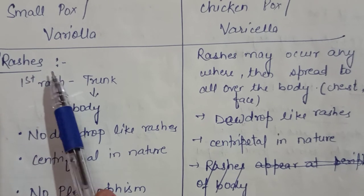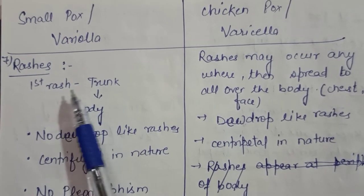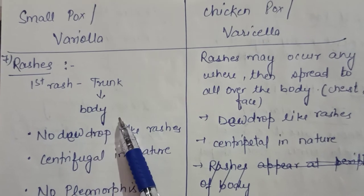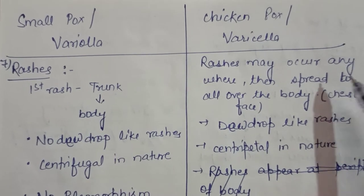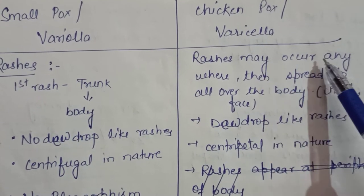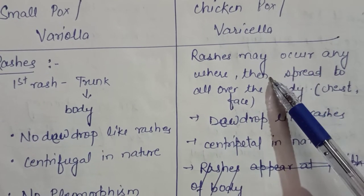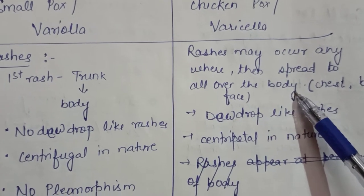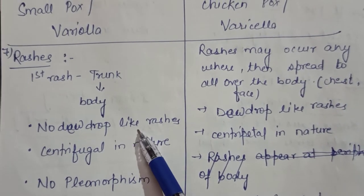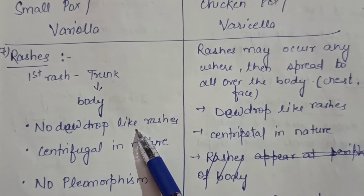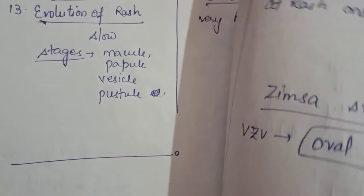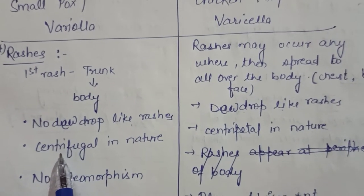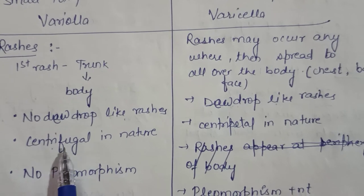In smallpox, the first rash appears on the trunk and then spreads to the whole body. In chickenpox, the rash may appear anywhere and then spreads all over the body. There are no dewdrop-like rashes in smallpox, whereas in chickenpox dewdrop-like rashes are present.